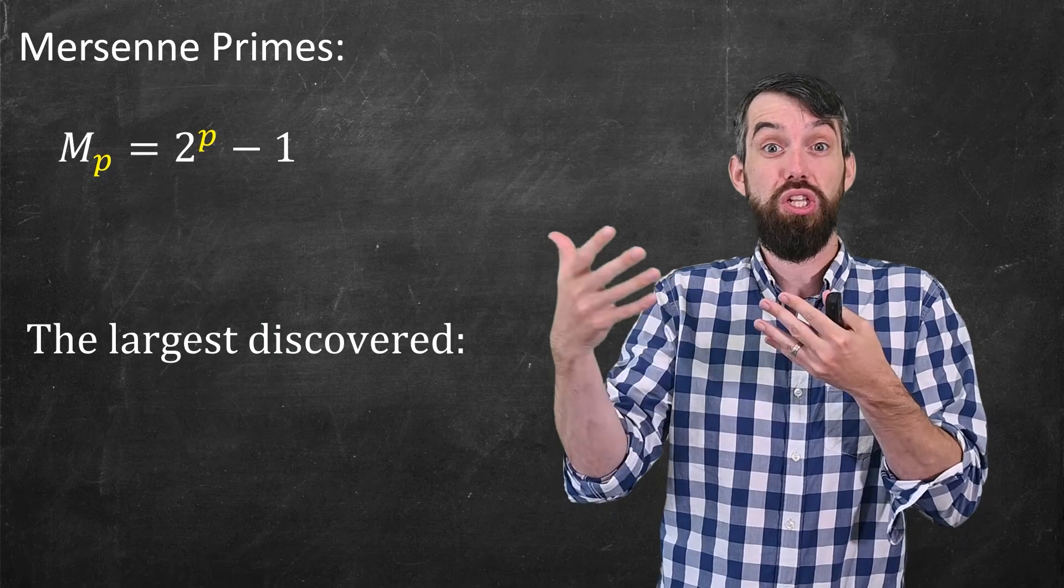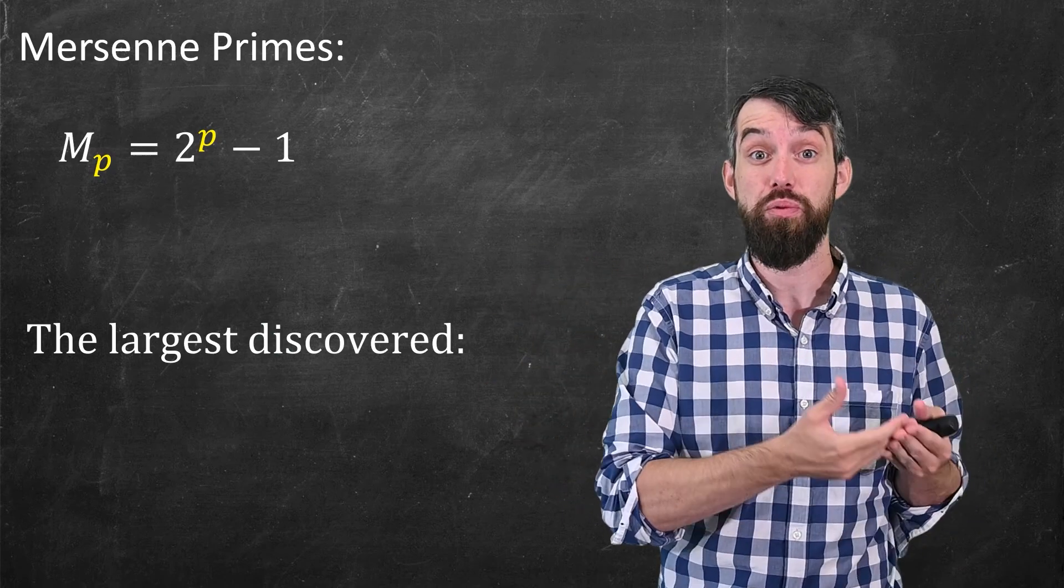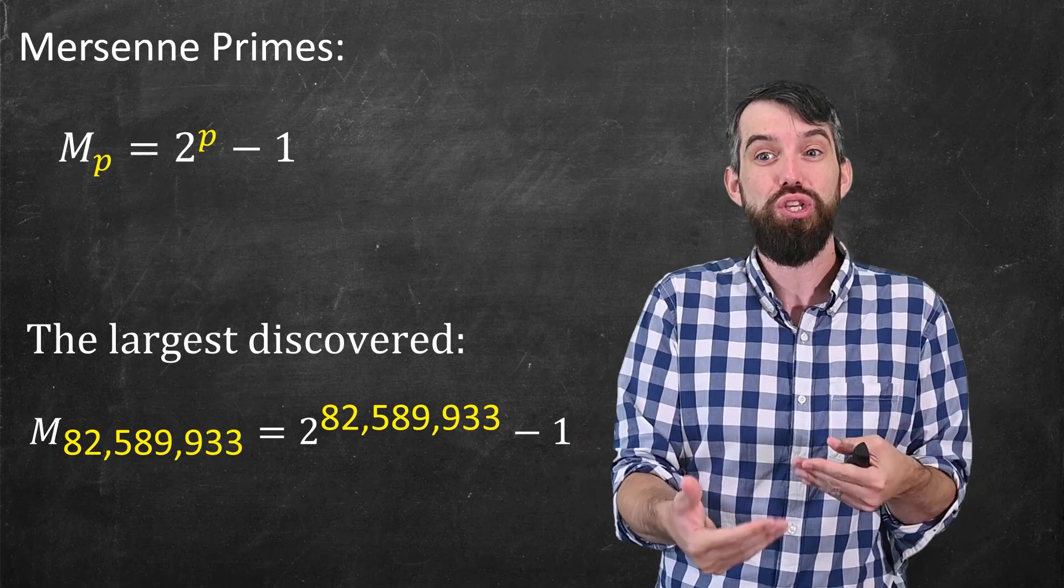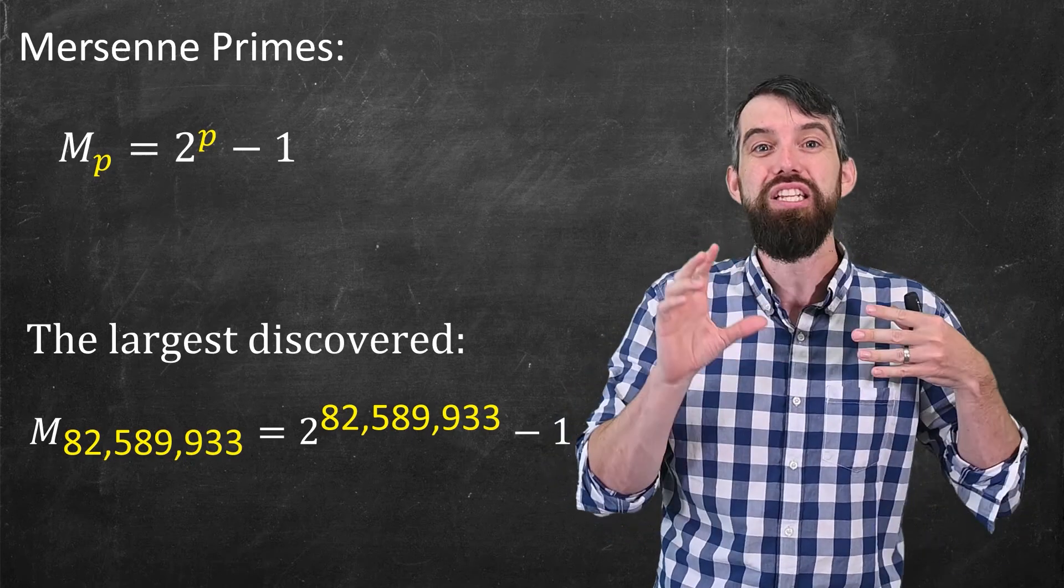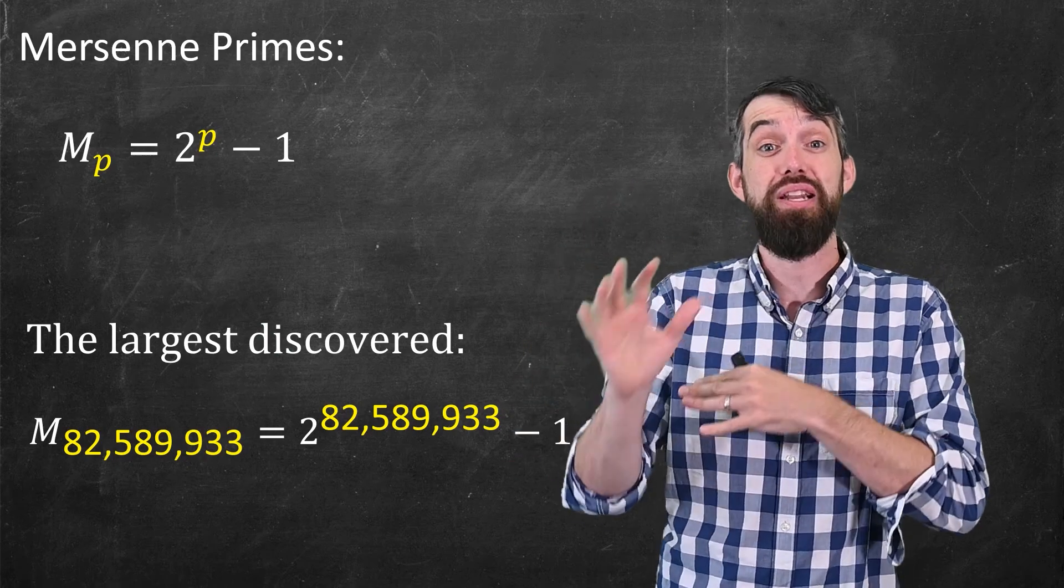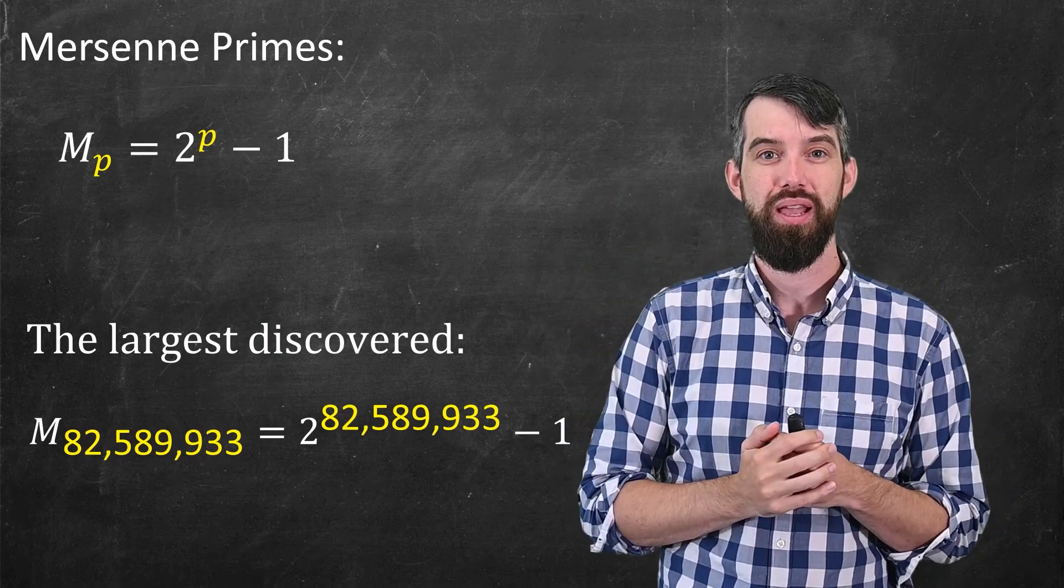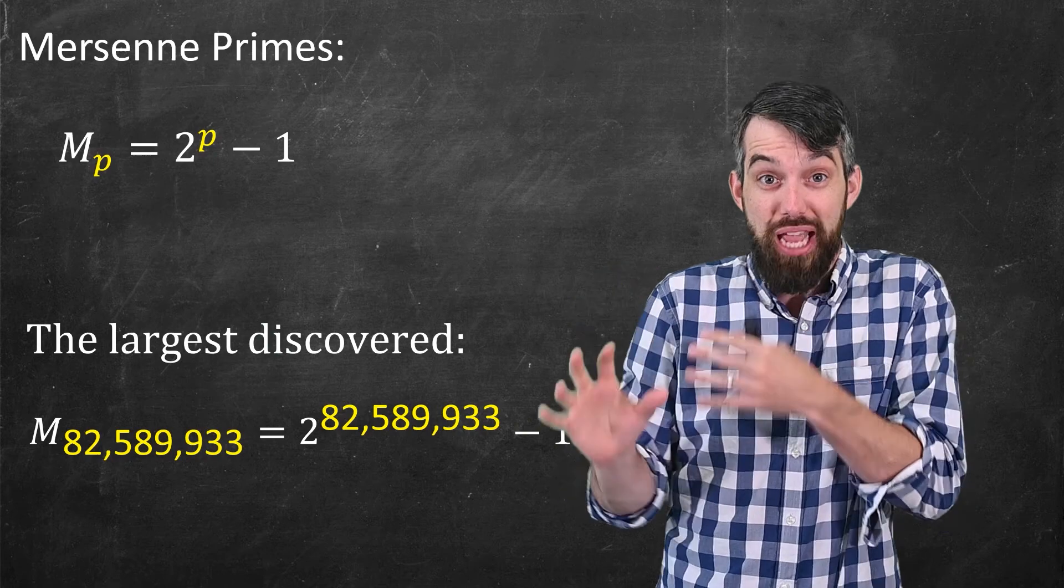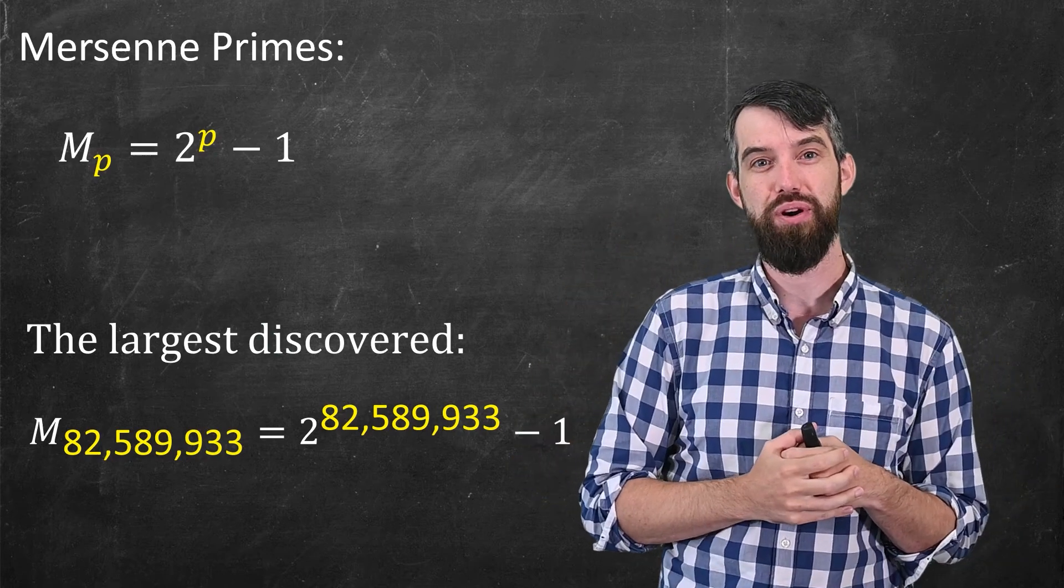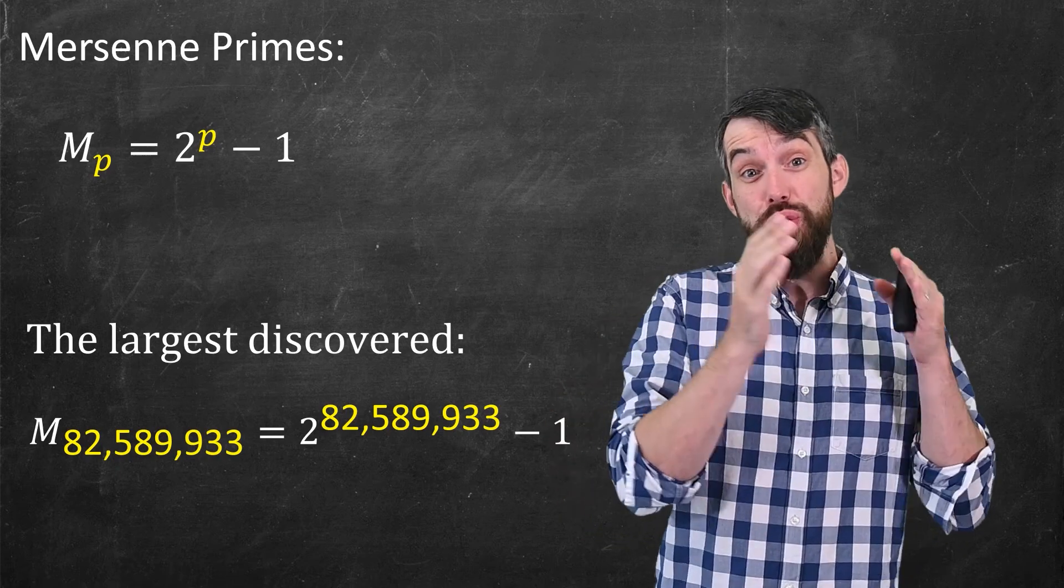Okay, so what is the largest such Mersenne prime that we've discovered? It turns out to be the Mersenne prime associated with p being about 82 million. And this has been confirmed to be prime. It is the largest Mersenne prime. In fact, it's not just the largest Mersenne prime. It is the largest prime number that humanity has ever discovered. This was discovered back in 2018.